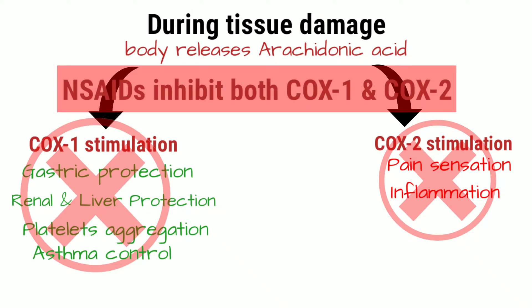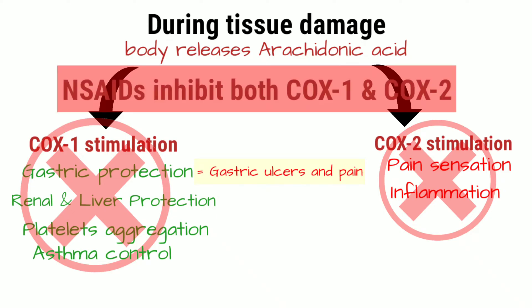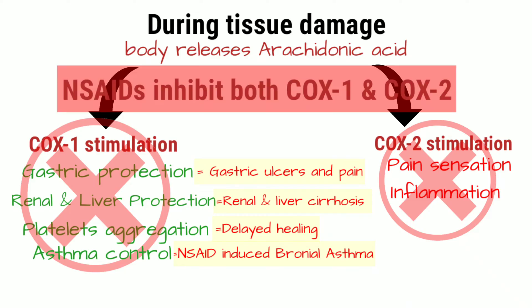However, because NSAIDs inhibit COX-1 along with COX-2, there will be no gastric protection, which could cause or worsen problems such as gastric ulcers. They will also inhibit renal function and inhibit platelet aggregation. These are common side effects due to the inhibition of COX-1.